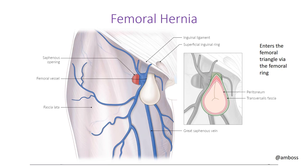For a femoral hernia: it passes through the femoral ring, located underneath the inguinal ligament superiorly, enters the femoral triangle, and if severe enough, can also pass through the saphenous opening. So the key spaces traversed are: the femoral ring into the femoral triangle, and potentially through the saphenous opening as well.